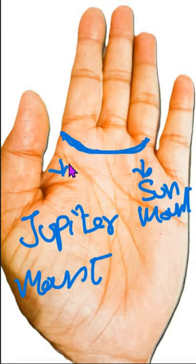It means that you have the moksha yoga, or also if any line goes to the Sun mount, it also indicates the moksha yoga. Thank you.